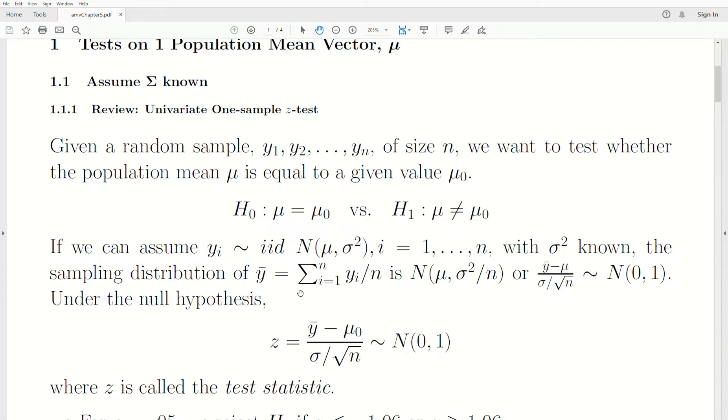And we know σ². Now, the sampling distribution of the mean, remember this is in the univariate setting, so it's the sum of the yi divided by n, is normal with mean μ and variance σ² over n. So then we can show that this standardized variable, ȳ minus μ₀ divided by the standard deviation σ over the square root of n, is a standard normal.